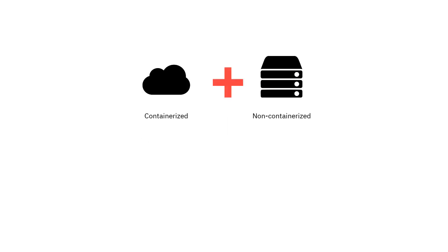Cloud Packs deliver IBM Enterprise software and open source components in open and secure solutions that are easily consumable and can run anywhere. They consist of containerized and non-containerized products. You use License Metric Tool to report utilization of license metrics for non-containerized products that belong to Cloud Packs. Use a separate component called License Service to report utilization of license metrics for containerized products.